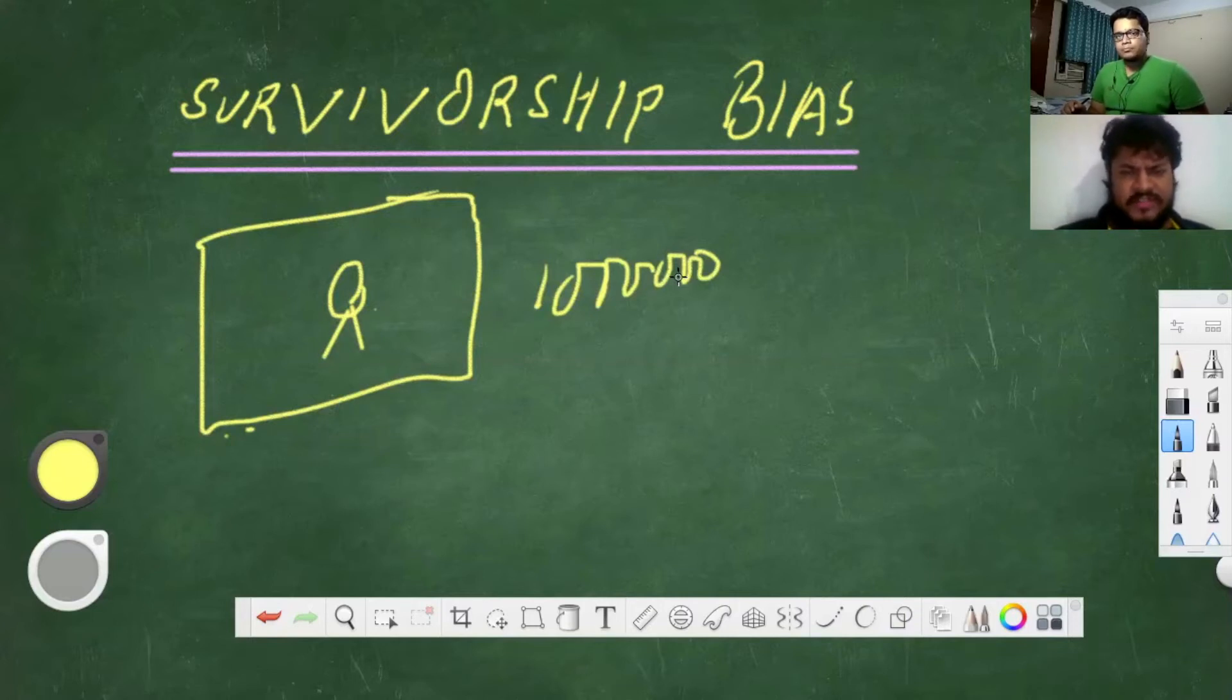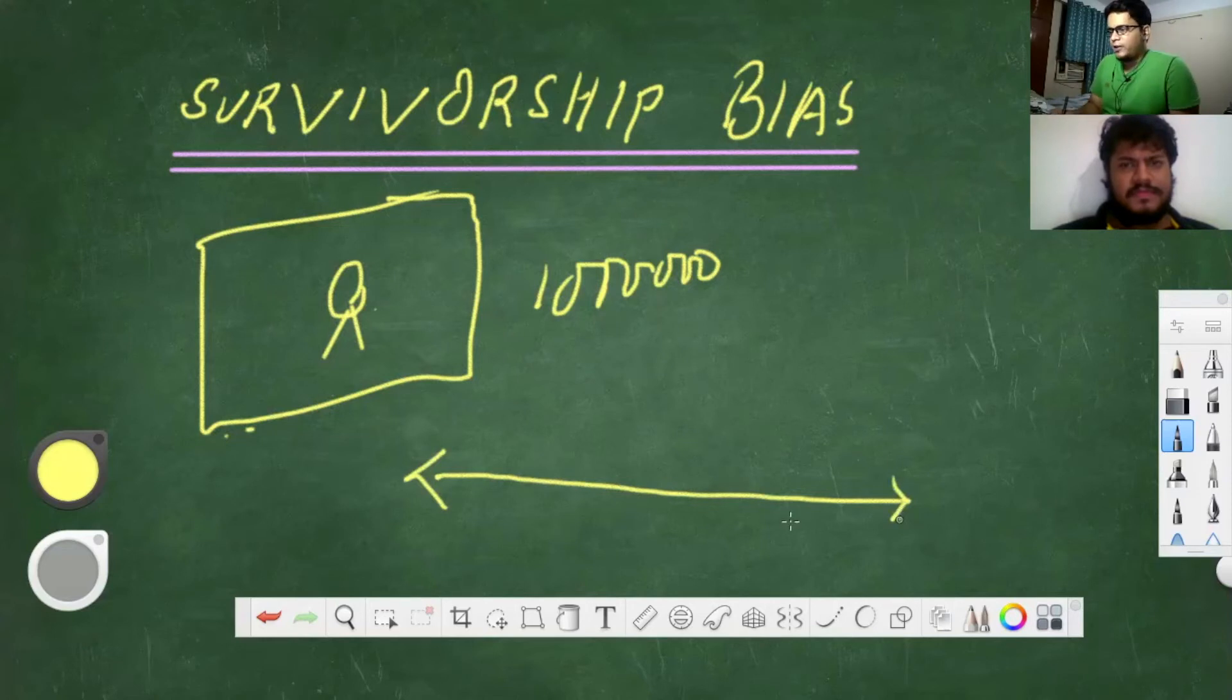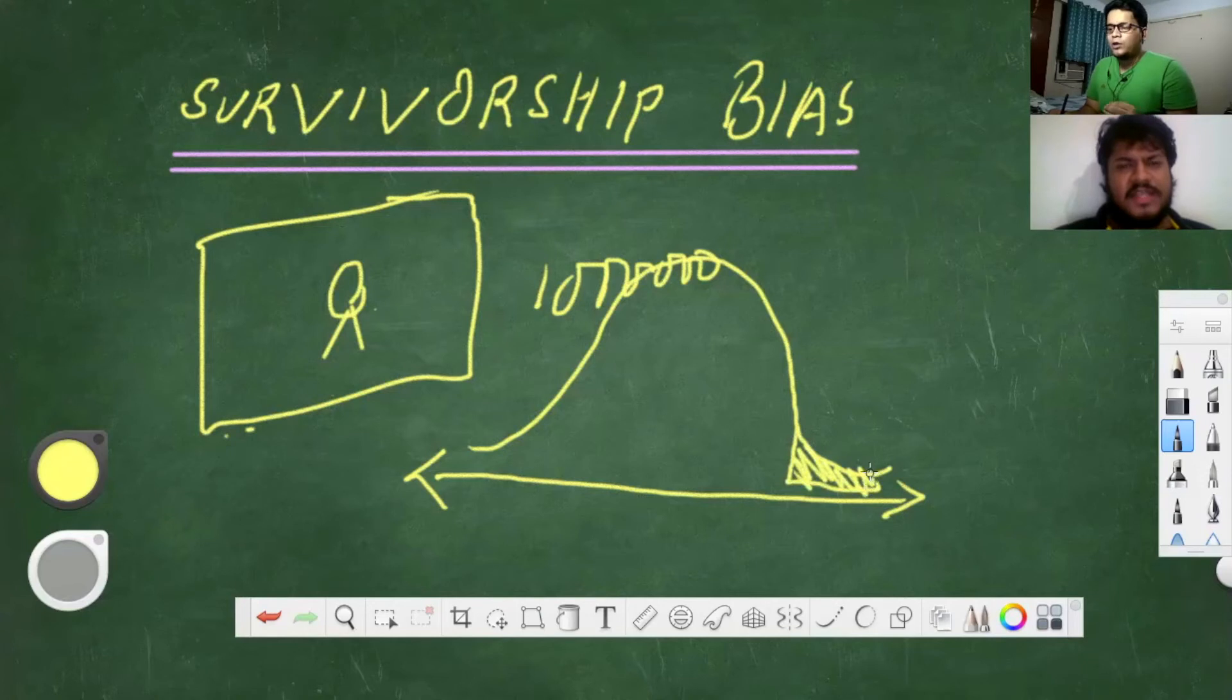That is what is referred to as survivorship bias. Yeah, totally. To be very brief, if I just put a line, this is the normal line, right? But we are only looking at the data of these. We are literally focused on like an end scale. So it's totally a skewed observation that we take when we are talking about survivorship bias.